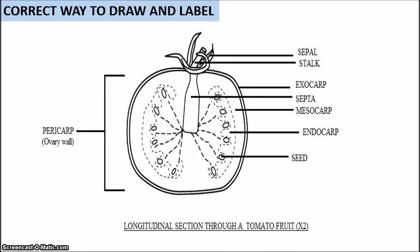So basically your label drawing should look like this. So we have all the labels placed. The different parts labeled. So it's a tomato fruit. So we see the key parts of a fruit highlighted. The sepal, the stalk, exocarp, septa, mesocarp, endocarp, the seed. And this whole entire structure represents the pericarp, which is the ovary wall. And we have our title at the bottom, the longitudinal section through a tomato fruit at times 2. So that is the correct way to draw and label your drawing.